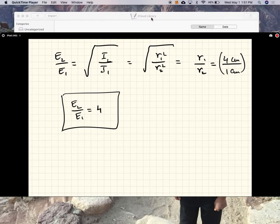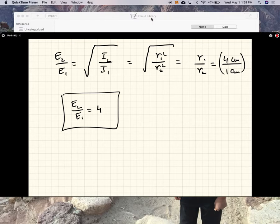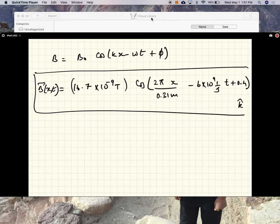So again, all we are saying here is the following. What we have found is, if the cross section of the beam reduces by a factor of 10, the amplitude of the electric field increases by a factor of 10. So that's what this problem is telling you.